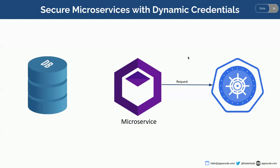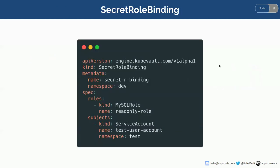So if you notice a leak or breach inside your environment, you can simply revoke the secrets and all other applications will have their own separate username and password. Your blast radius gets reduced by a lot. Our microservice will request credentials using dynamic credentials, and our operator will provide a username and password. The service can then use those credentials to read or write from the DB according to its role.